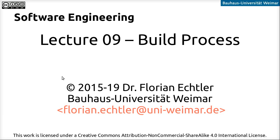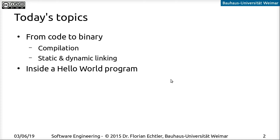Welcome to software engineering. Today let's talk about how the build process actually works — what happens when you compile your code. We're going to look at the path from source code to executable binary. In particular, there are two important steps: the actual compilation, and static and dynamic linking. Then we'll have a look under the hood of a hello world program, both for C code and for Java.